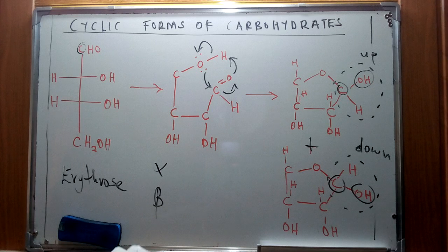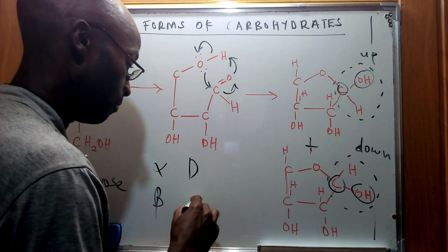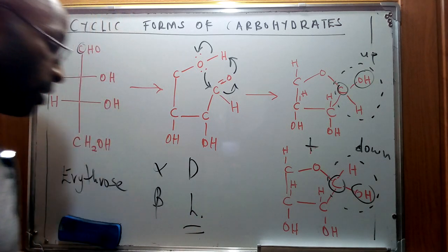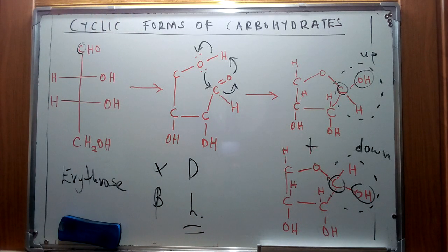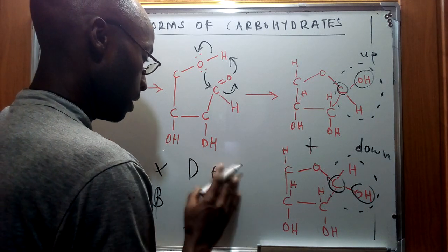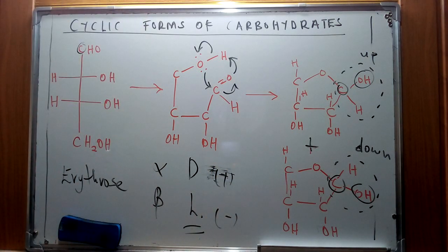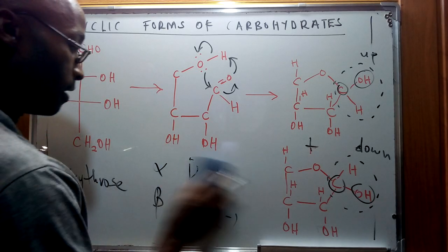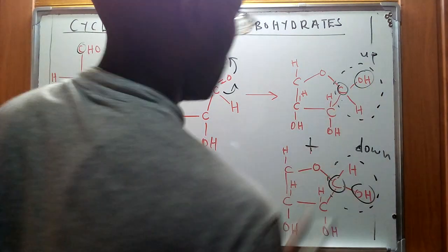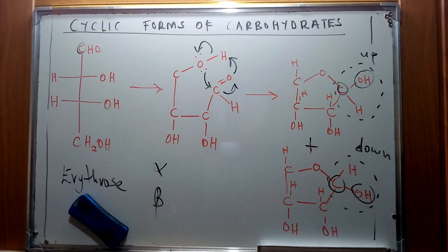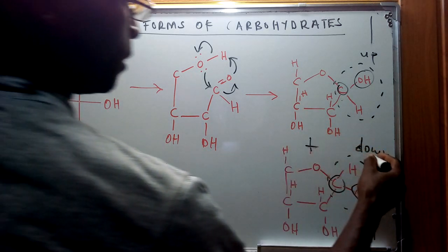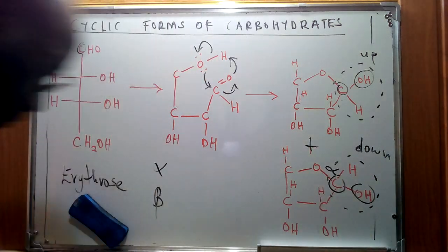If we have a D-series molecule — we've talked about the concept of D and L for the right and left position of the OH group respectively — we're going to have an additional concept whereby we designate alpha and beta for the position of the OH group at the anomeric carbon. For the D-series, a molecule is considered alpha if the anomeric OH group faces down, and beta if the anomeric OH group faces up.